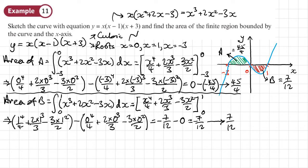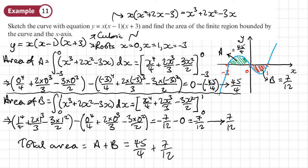The total area is A + B = 45/4 + 7/12 = 71/6. We leave it as an exact fraction. To summarize: areas above and below the axis must be worked out separately, which requires finding the roots through factorizing to determine the correct limits for each integration.